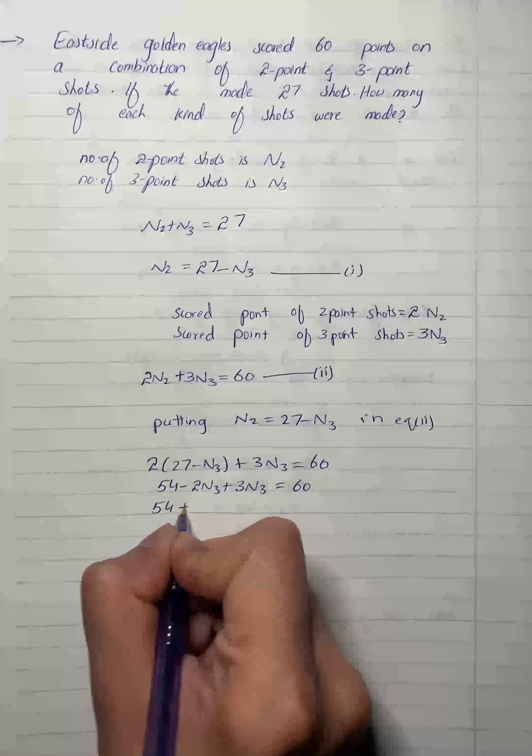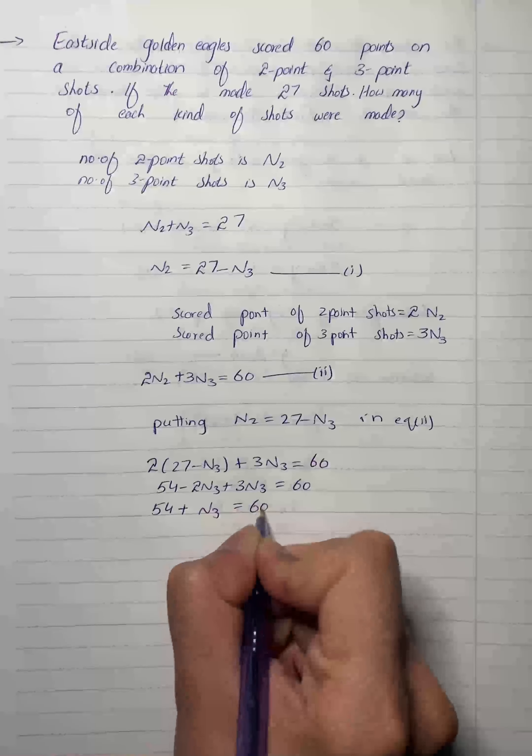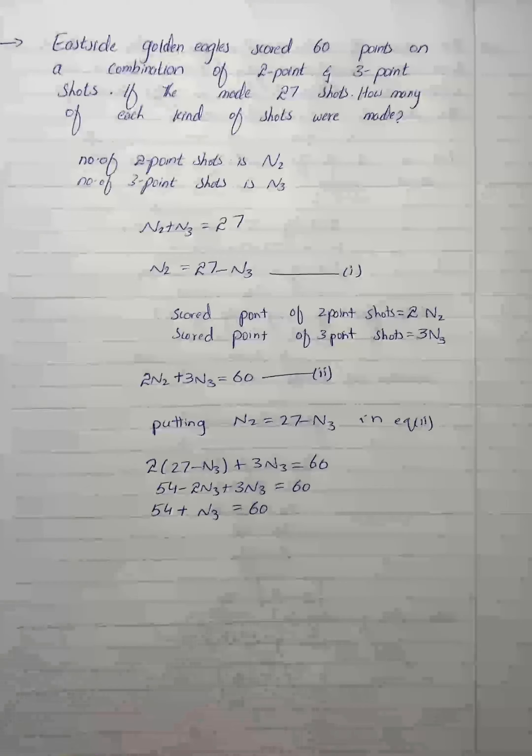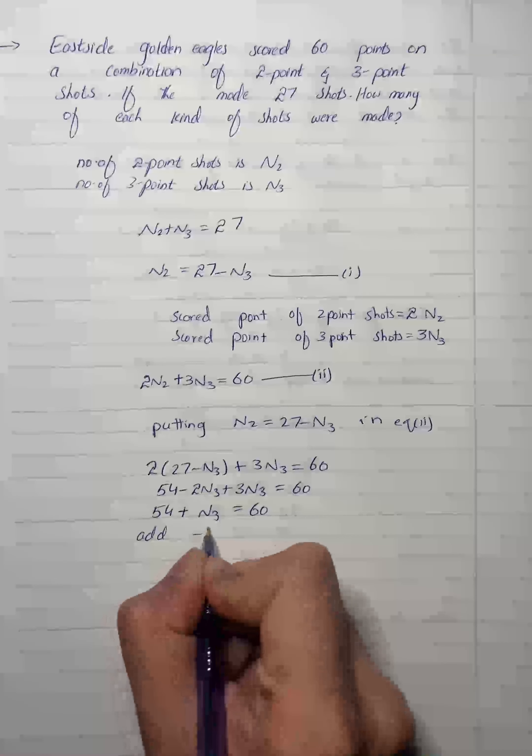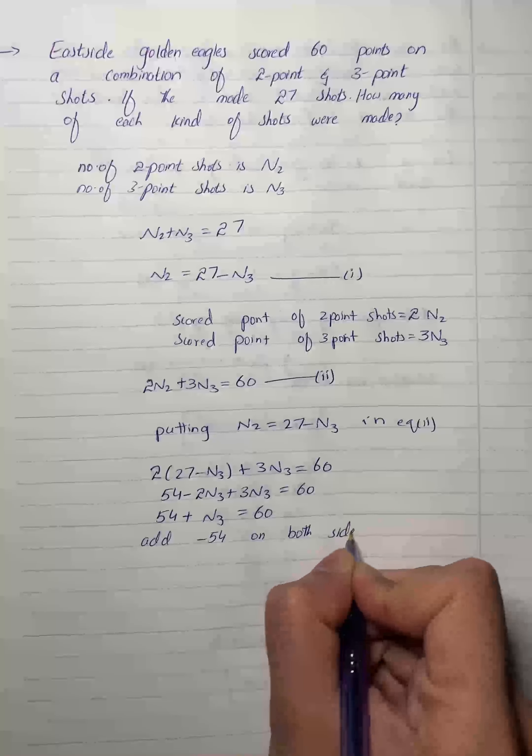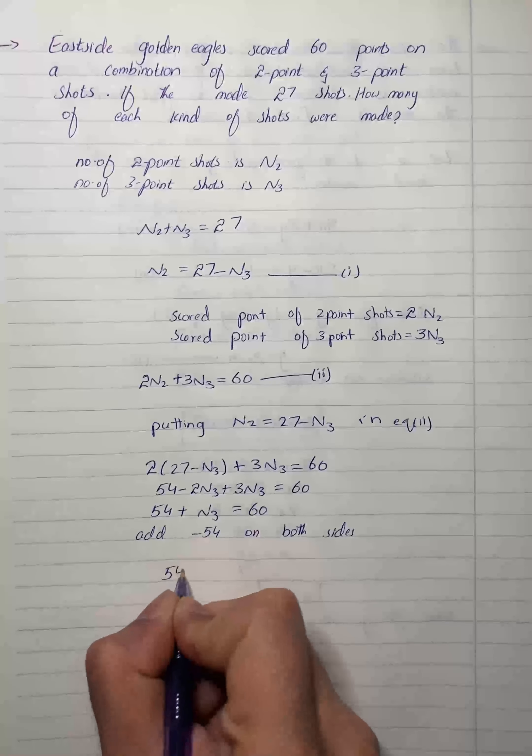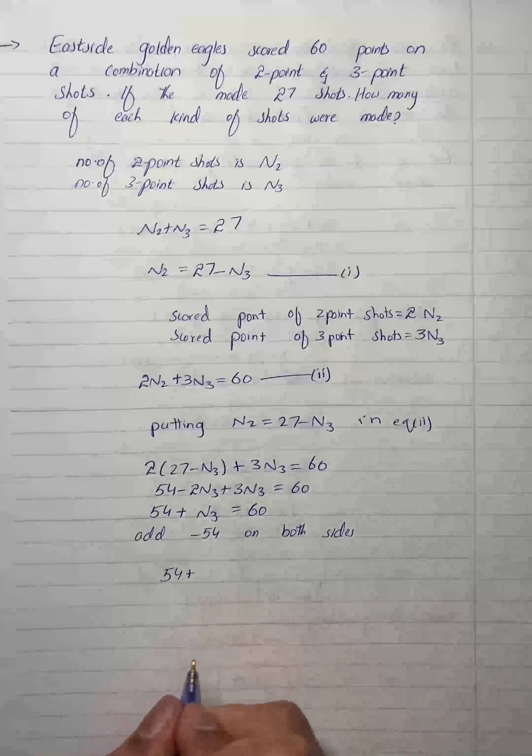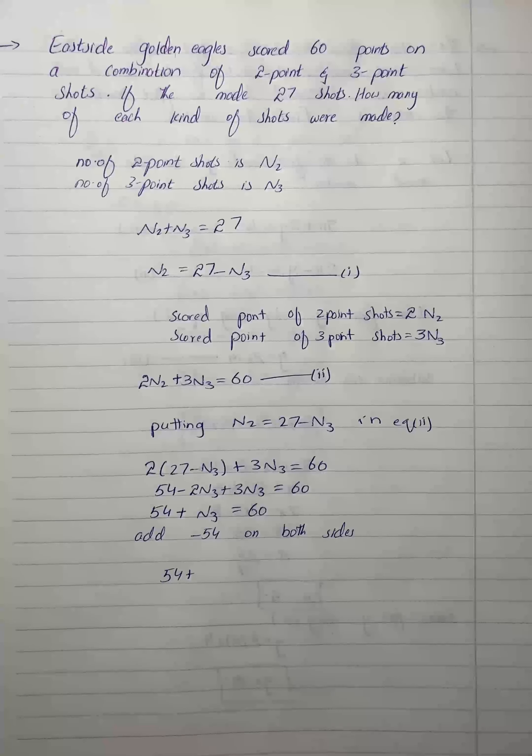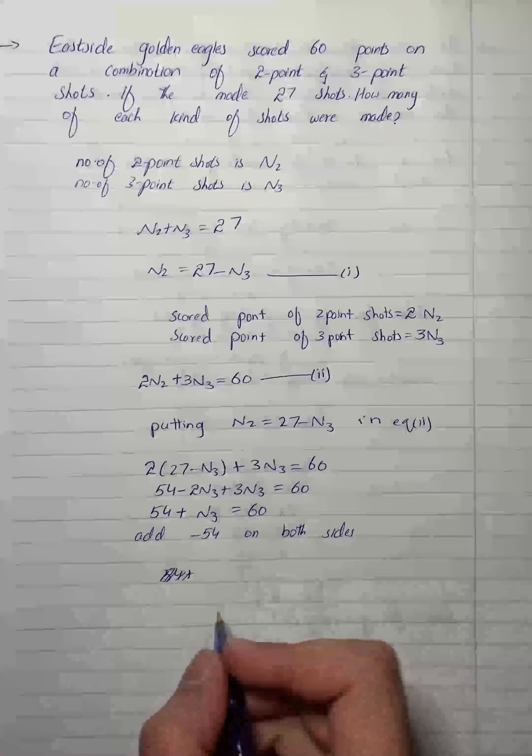On further simplification, 54 plus n3 equals 60. Now we will add minus 54 on both sides. This is going to eliminate the 54 plus, and after addition of minus 54 it will become n3 equals 60 minus 54.